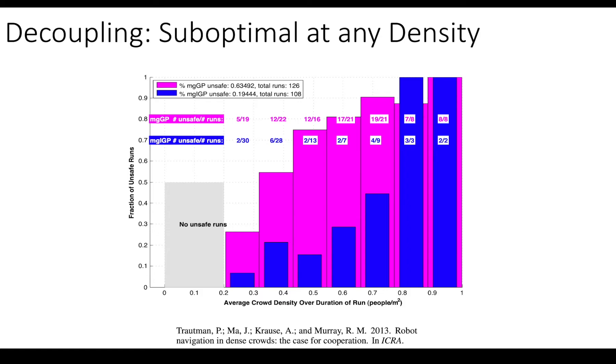But we can also see from empirical data that decoupling leads to suboptimalities at any density. So here we have two models that we're comparing. The magenta one is a model that doesn't capture interaction, and the blue model is one that does. And what we see is a large safety decrement in all densities, just simply from dropping the interaction term.